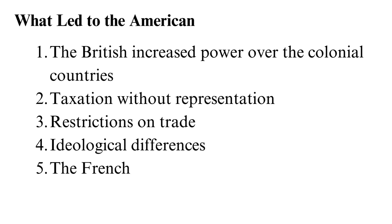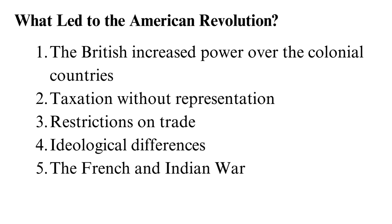What led to the American Revolution? The American Revolution was caused by various political, economic, and social issues. One key factor was the British increased power over the colonial countries. The British government started exercising total control over the colonies. British enforced laws denying their freedom, making the colonial people rebel. Some of these laws include the Quartering Acts and the Stamp Act.